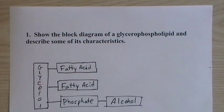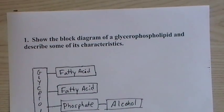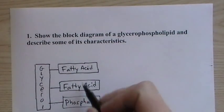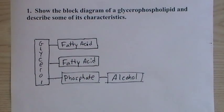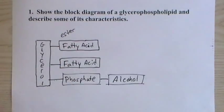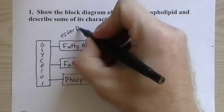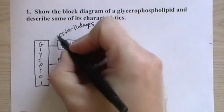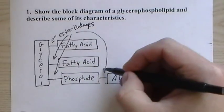Show the block diagram for glycerophospholipid and describe some of its characteristics. We have glycerol with, instead of three fatty acids, two fatty acids, then a phosphate group and an alcohol. These we know are ester linkages in this pen. These are all ester linkages. These two we knew were, and then we find that these are as well.